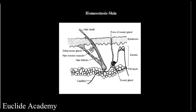Under thermal regulation, when the body overheats, the hair lies flat on the skin and the erector muscles relax — they won't contract — so the hair falls down, as you can see here. Under vasodilation, the capillaries here increase in size, meaning more blood comes to the surface glands where it can lose heat.